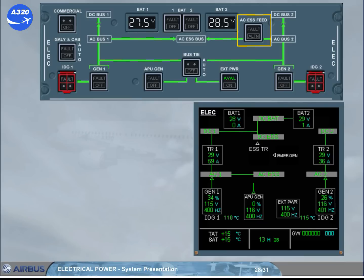The AC essential feed push-button switch enables the pilots to change the supply to the AC essential bus from AC bus 1 to AC bus 2.